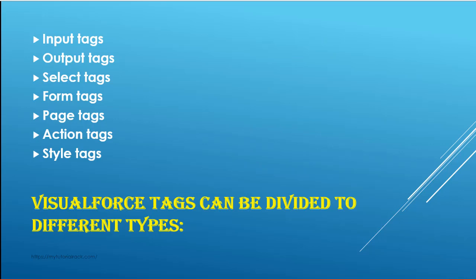Output tags are used if you want to display something on the screen. For example, if you wanted to display a link or a label, those are the different kinds of output tags — used to display something on the screen.